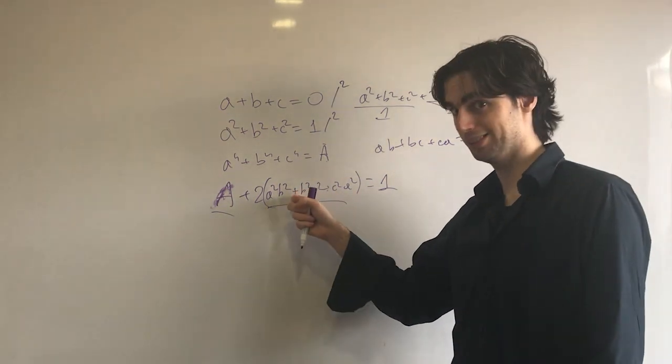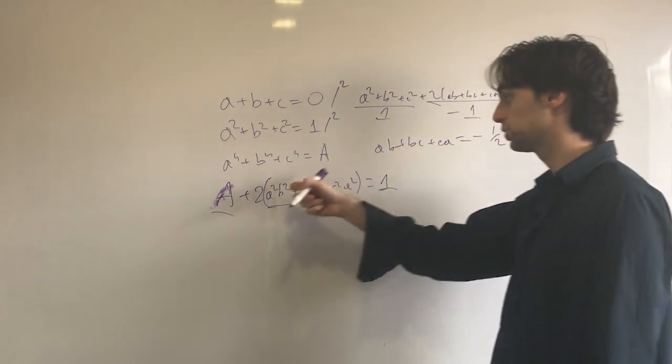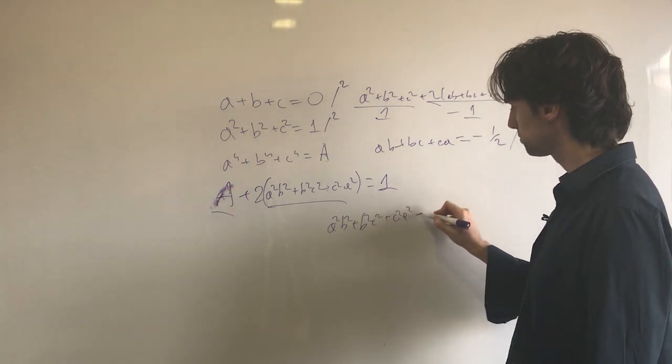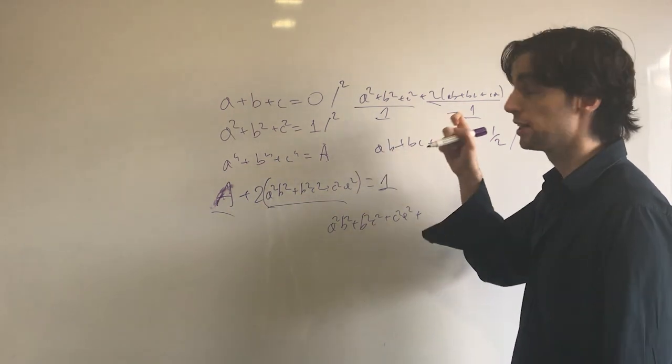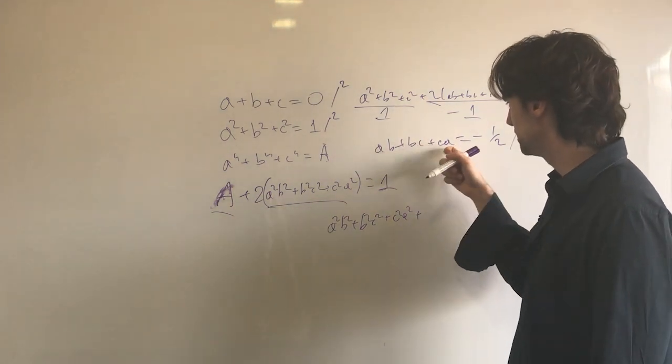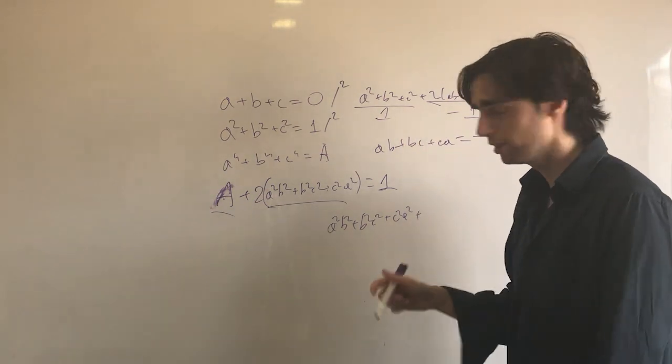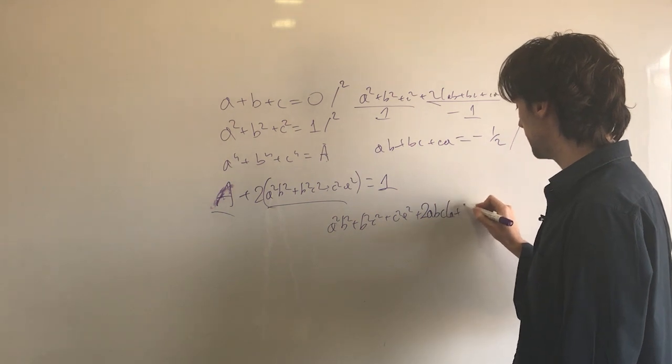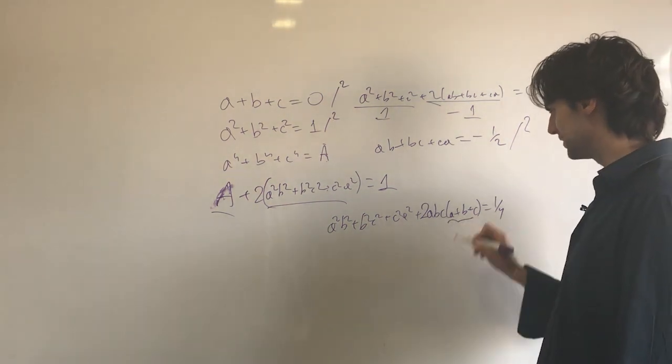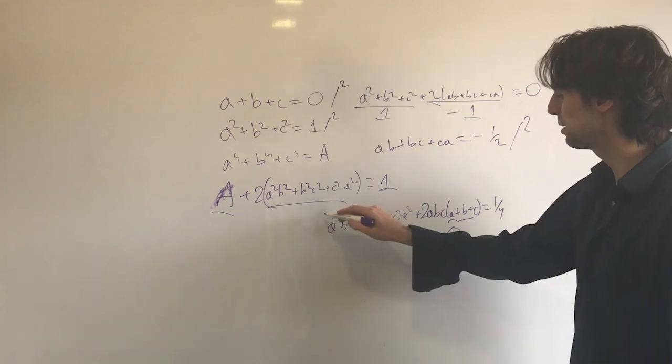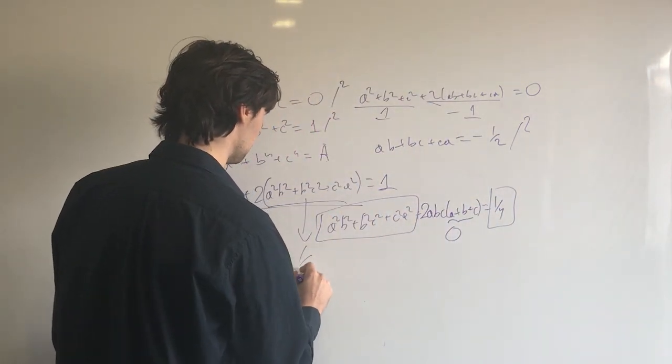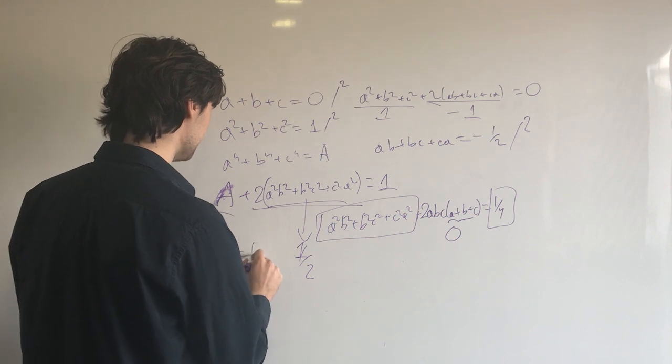Now that we have this, let's square it. We get a²b² + b²c² + c²a² + 2abc(a + b + c) = 1/4. But a + b + c = 0, so this simplifies to a²b² + b²c² + c²a² = 1/4, which means this term equals 1/2. So A = 1/2.